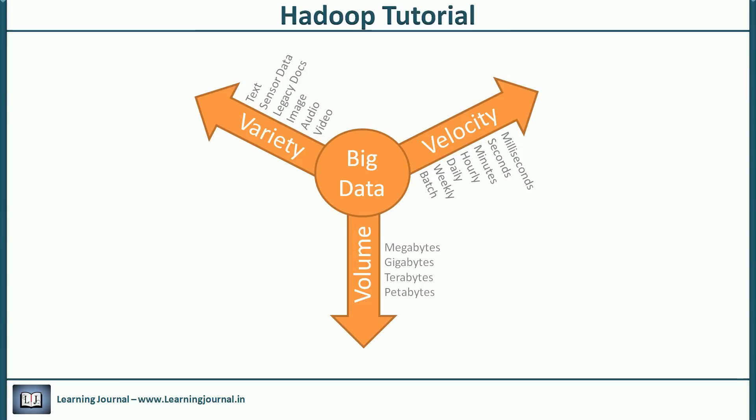Coming back to our question — do we call a 100 GB data set big data? In this case, we already know that the volume is 100 GB, which doesn't appear to be too big. To call it big data, we may need to get details of the other two Vs: velocity and variety. If we realize that we are getting data at the rate of 100 GB per minute and there is a need to store or process it at the same speed, I will want to call it big data.